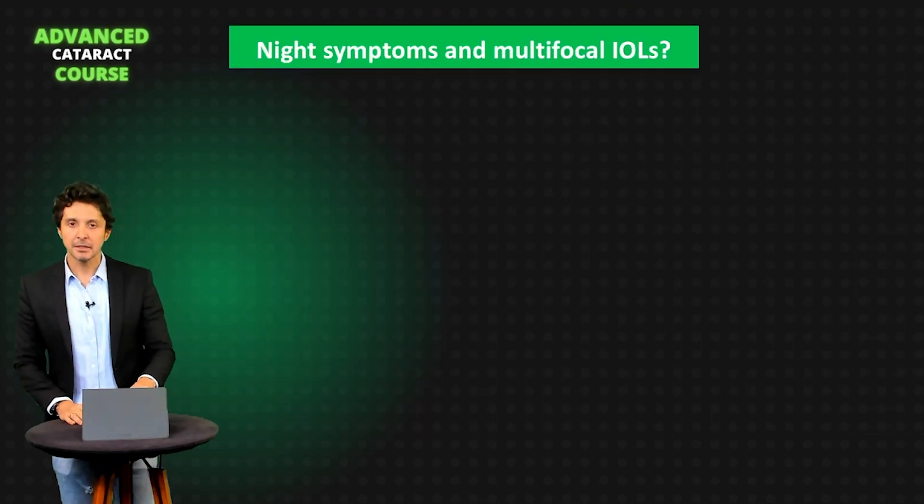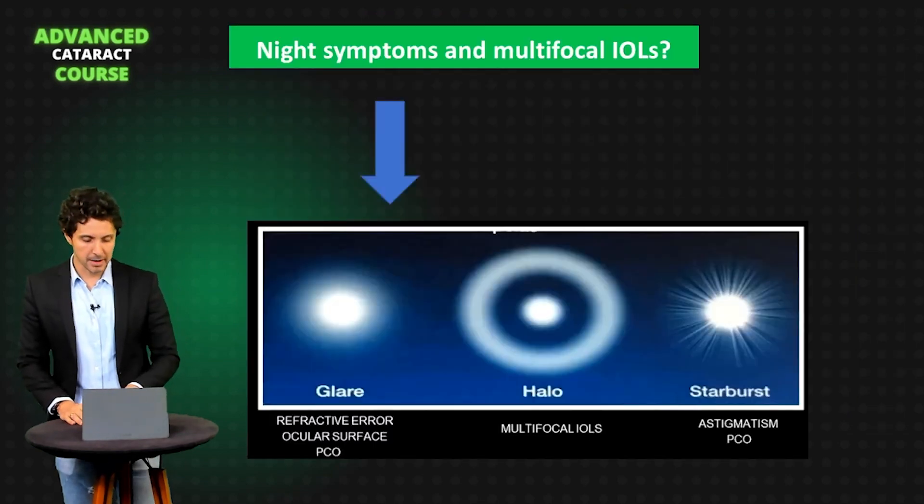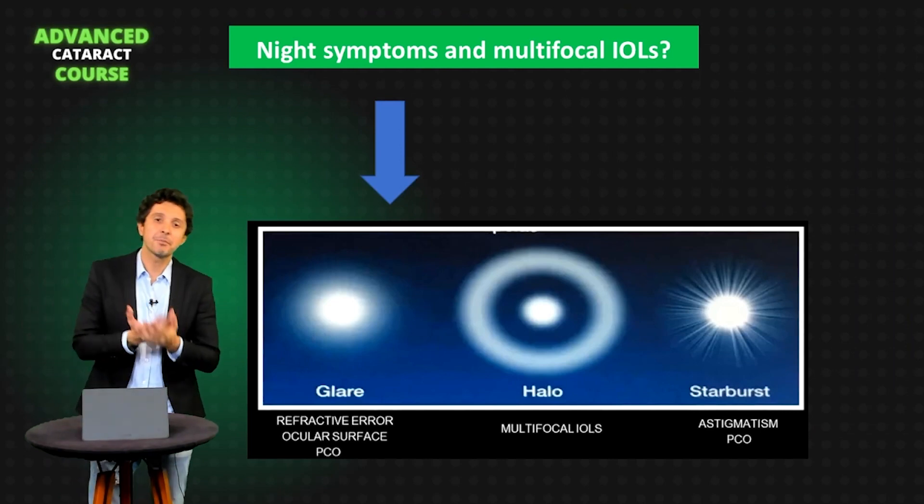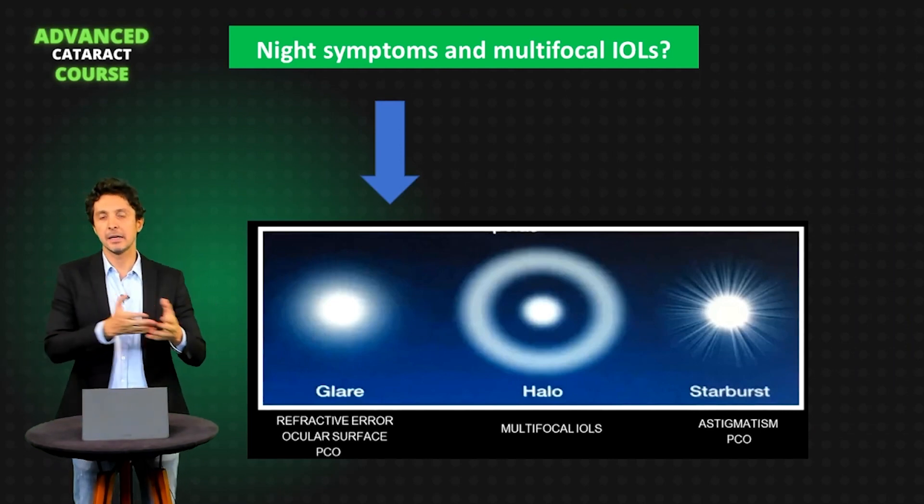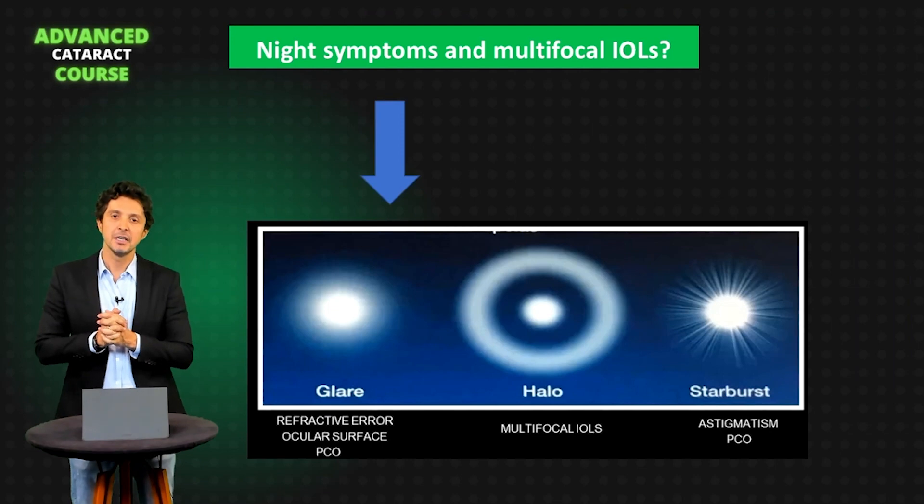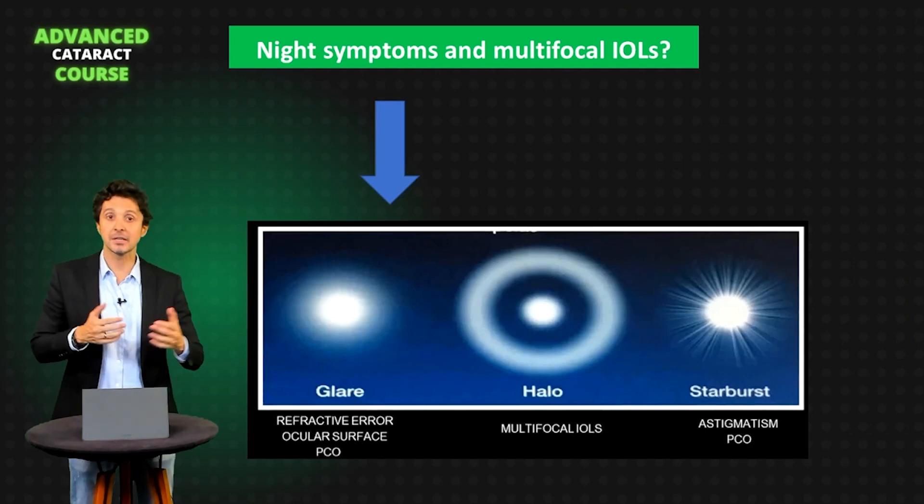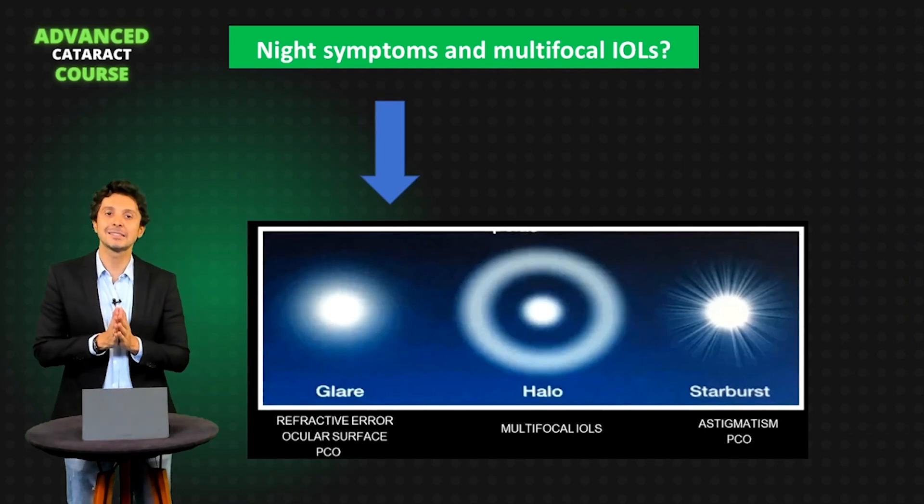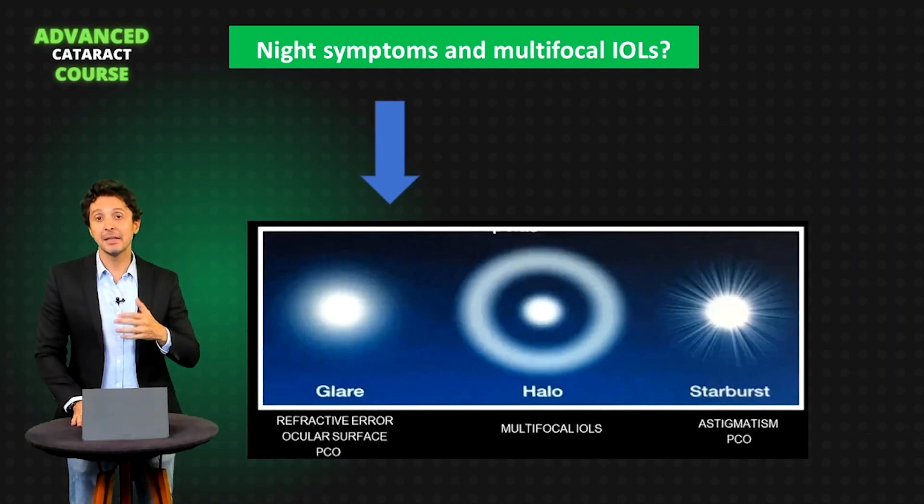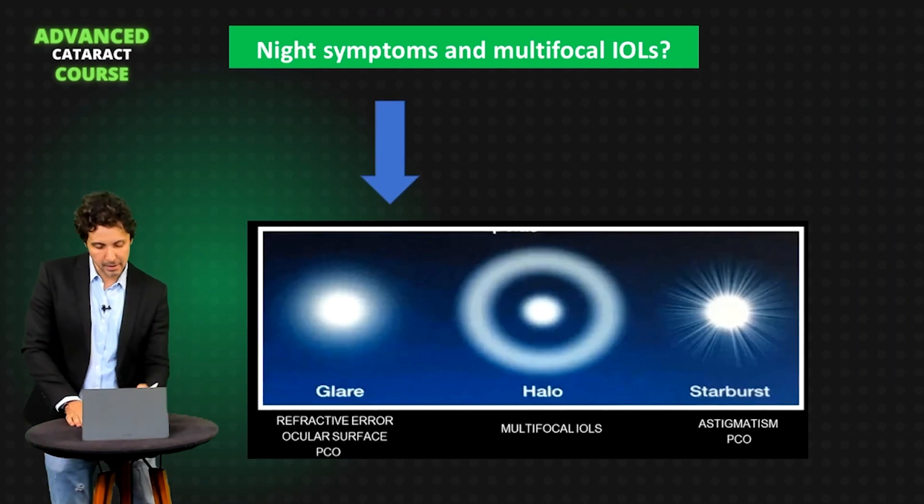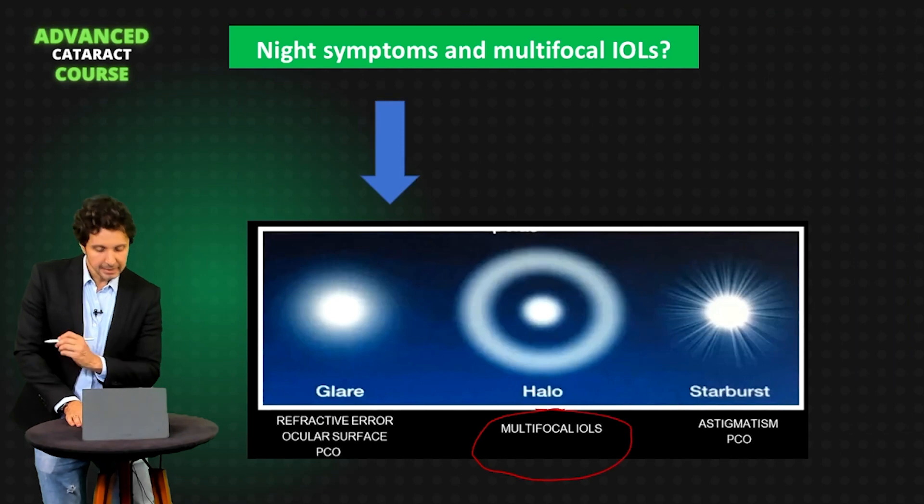Night symptoms and multifocal trifocal IOLs. Sometimes your patient can come to your doctor's office and they can tell you, I have glare and I have halo or starburst. You need to understand that the main symptom about multifocal IOL, as you can observe here, is halo.